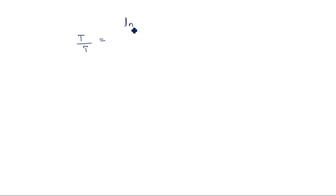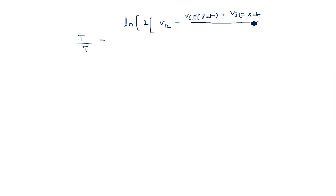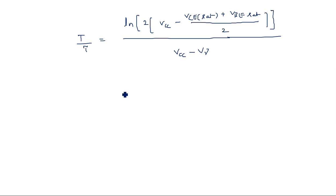Therefore, T/tau equals the natural log of (2·VCC minus VCE_sat plus VBE_sat) divided by (VCC minus V_gamma). This can be separated as: T = tau·ln(2) plus tau·ln of [(VCC minus VCE_sat plus VBE_sat)/2] divided by (VCC minus V_gamma).